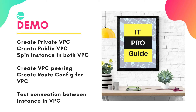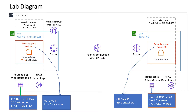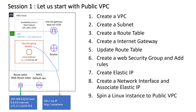Have a look at the lab diagram. We're going to create a VPC in public and private. In the private, there is no internet gateway, and in the public, we have an internet gateway. Then we create a route table and attach the internet gateway. After that, the instances in both VPCs can talk to each other. For session one, we're going to create the public VPC: a VPC, then a subnet, then a route table and an internet gateway. We update the route table with the internet gateway, create a security group with rules, create an elastic IP, associate the network interface with the elastic IP, then spin a Linux instance into the public VPC.